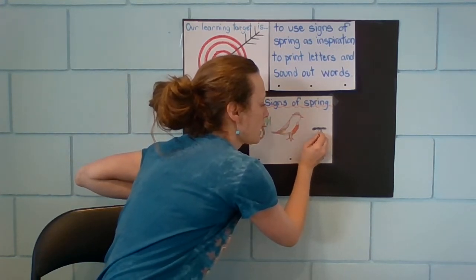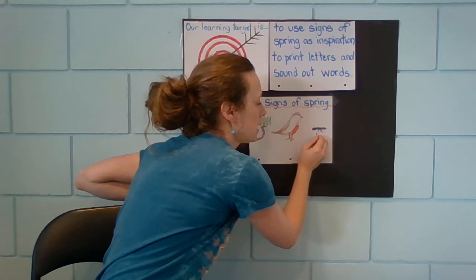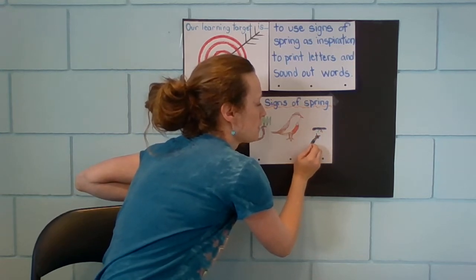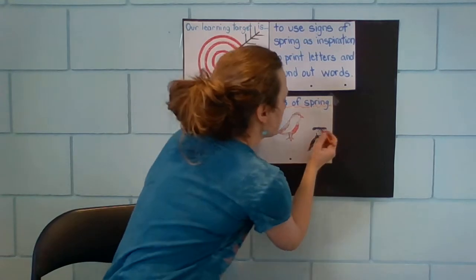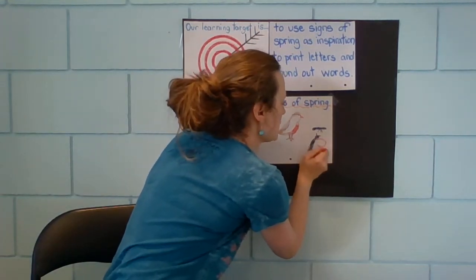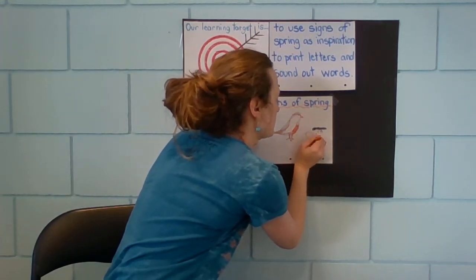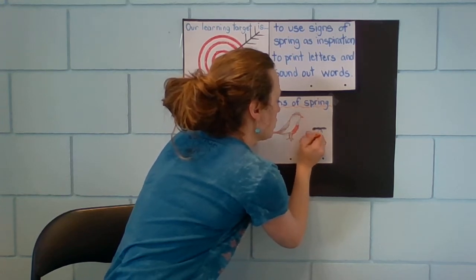So a butterfly has a head and the antennae and the body. And then it needs wings. So we can look for them today. There we go.